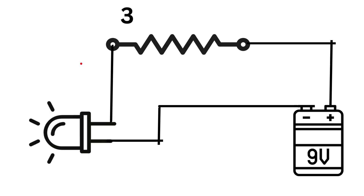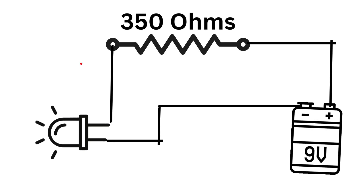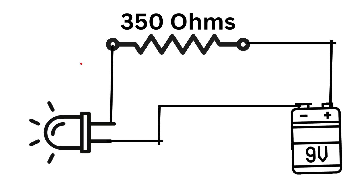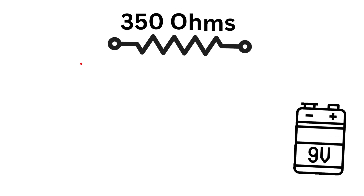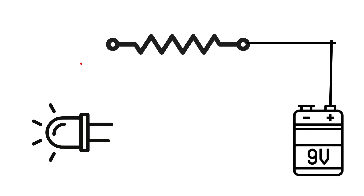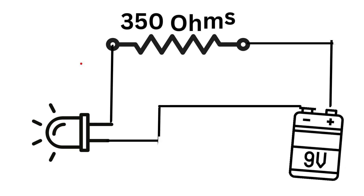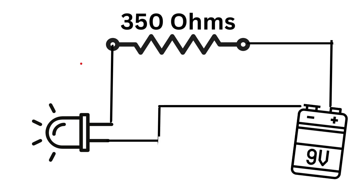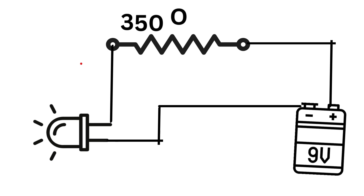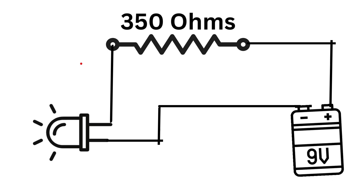So we need a resistor of at least 350 ohms to keep our LED safe while still lighting up. Now that we have our components selected, let's put the circuit together. Connect the positive side of the battery to one end of the resistor, then connect the other end of the resistor to the anode of the LED. Finally, connect the cathode of the LED to the negative side of the battery. When we apply power to our circuit, the LED lights up, thanks to the careful application of Ohm's Law to control the current.